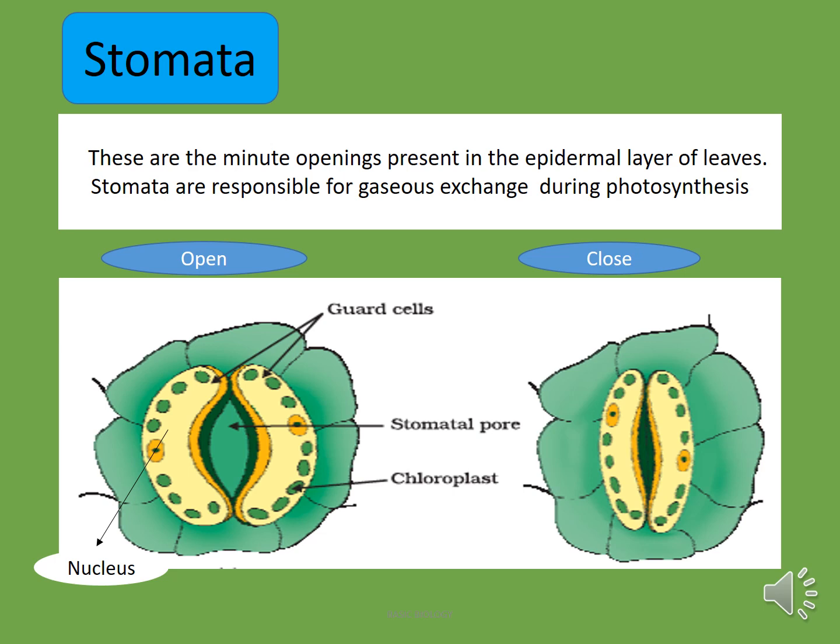Now stomata. Stomata are the minute openings which are present in the epidermal layer of the leaves. Epidermal means the outer layer of the leaves. Stomata are also responsible for the gaseous exchange during photosynthesis — carbon dioxide goes inside through the stomata and oxygen is released out in exchange. There is one more function of stomata: stomata also help in transpiration. Transpiration is the removal of excess water from the surface of leaves. So stomata have two functions: first they help in gaseous exchange during photosynthesis, and second they help in transpiration.